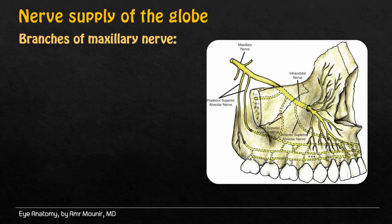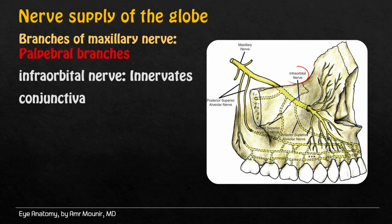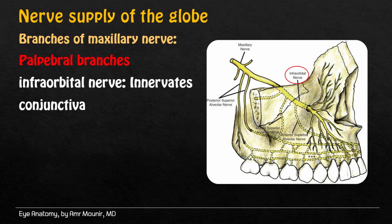Branches of the maxillary nerve include the ribibral branches of the infraorbital nerve, which innervates the conjunctiva.